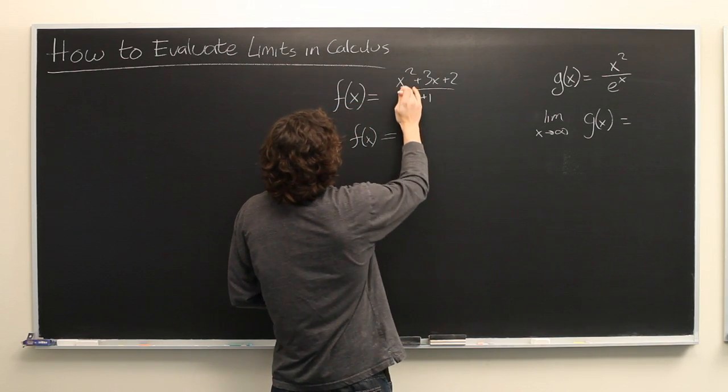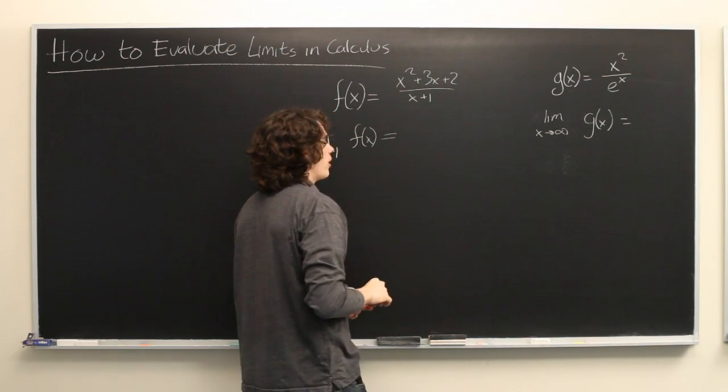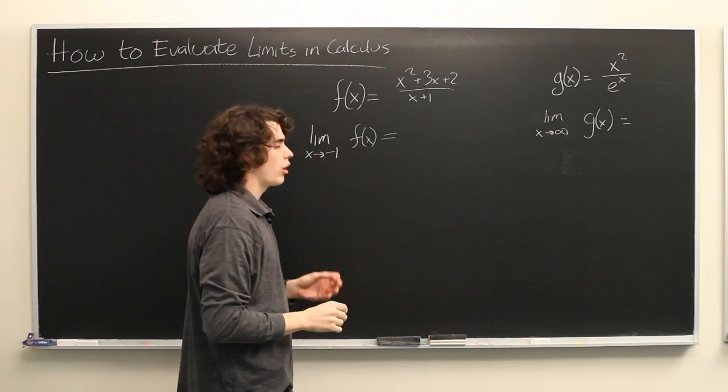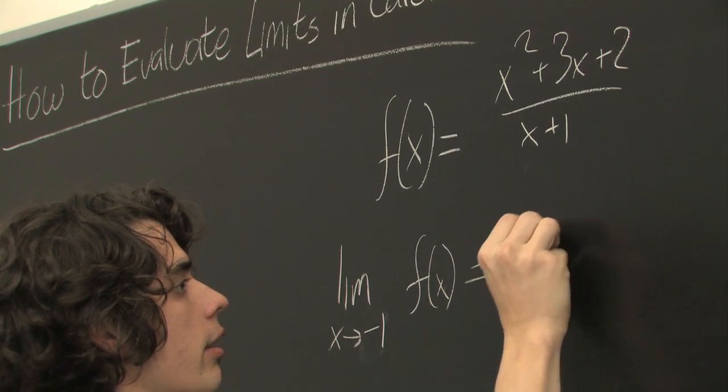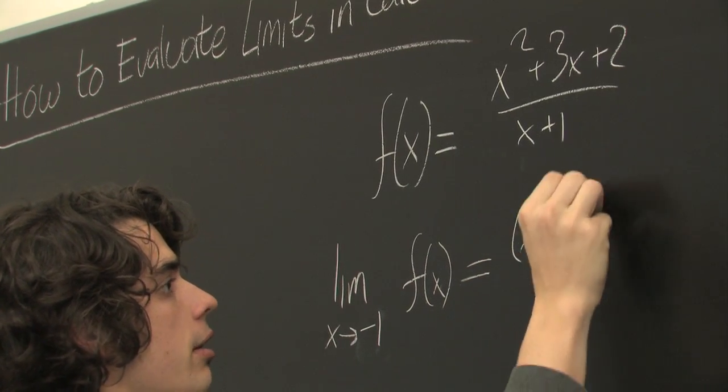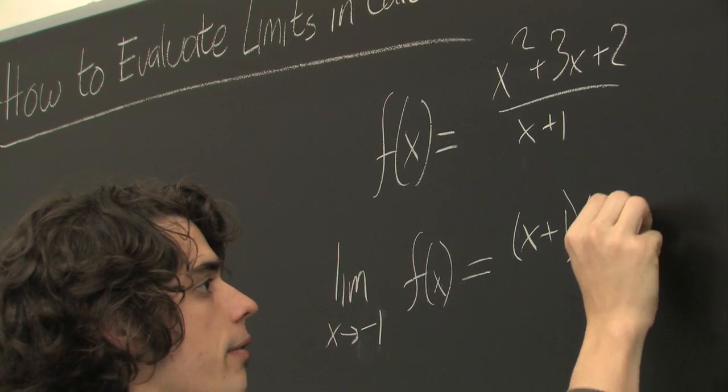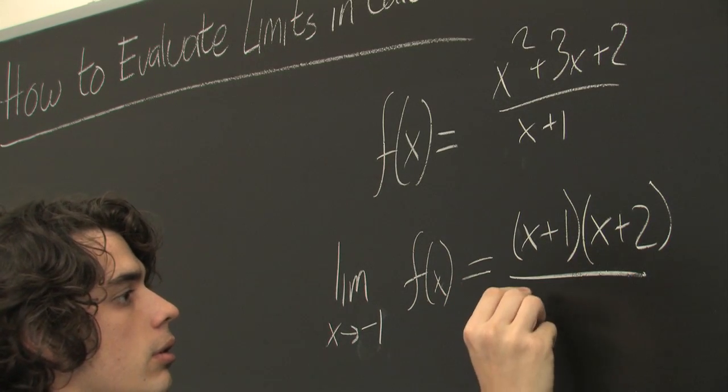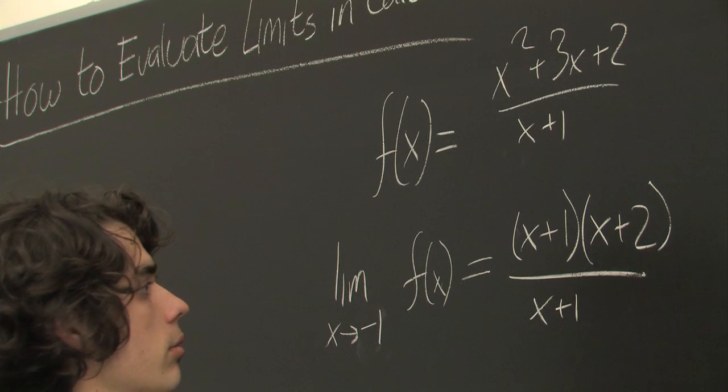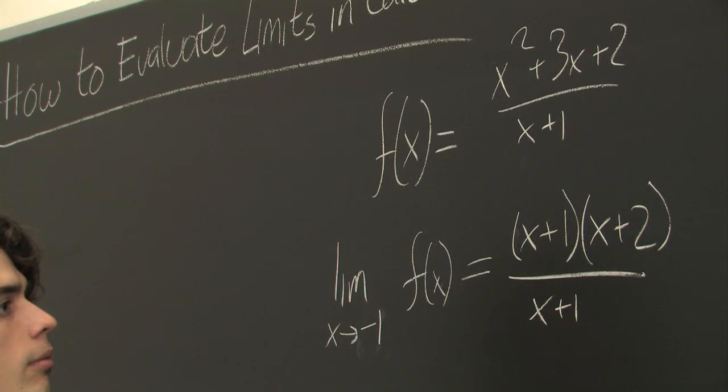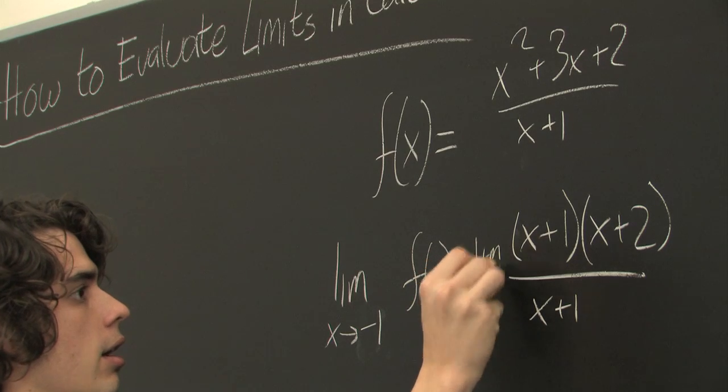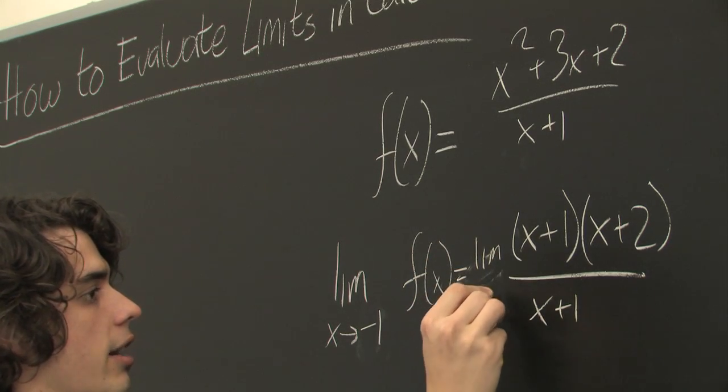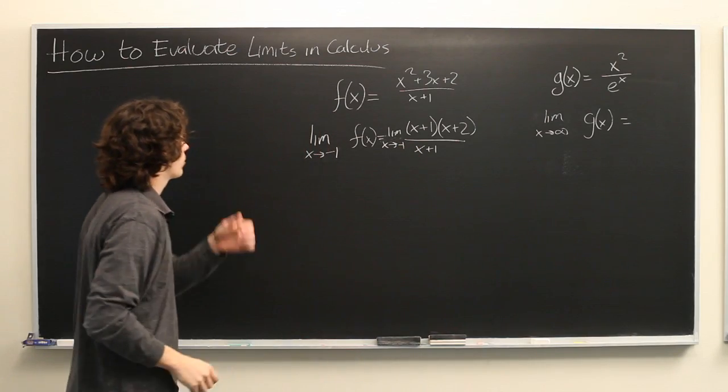So one of the tricks, if you've got a polynomial in the numerator and then the denominator, you can start by trying to factor them and see what you get. And here the numerator conveniently factors into x plus one times x plus two, and again we are taking the limit as x goes to negative one.